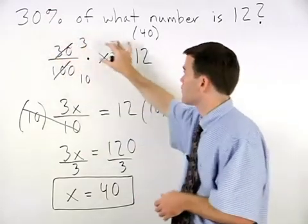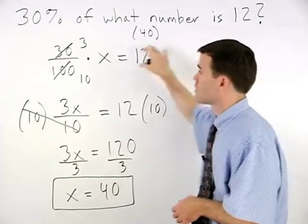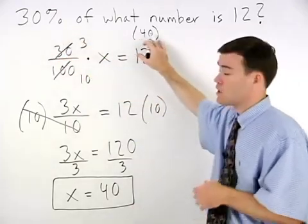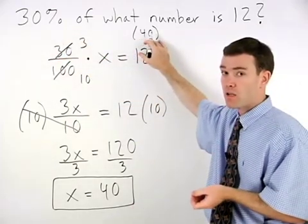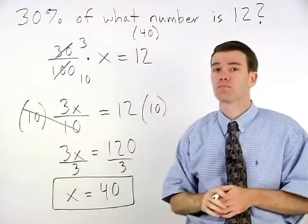we know that 100% of 40 would be 40. So 30% of 40 should be a lot less than 40. So 12 seems to make sense.